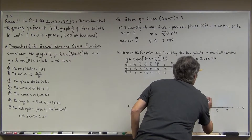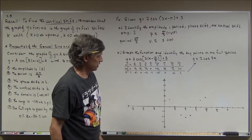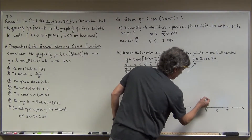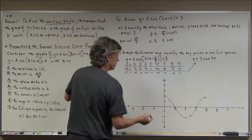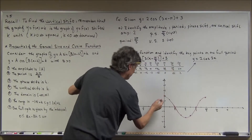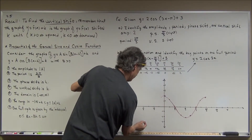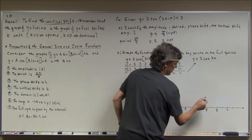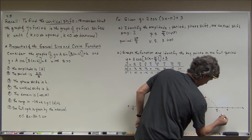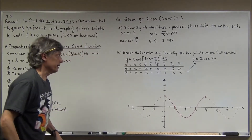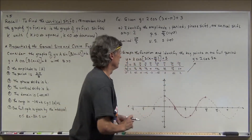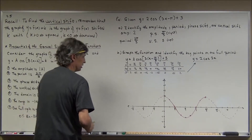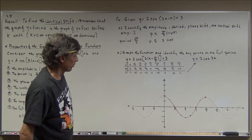Those points give me one full cycle — you can see it going from 2 back up to 2. I'll continue this with a dotted curve to show more of the graph, but the key points cover one full period. Now, to get the final graph from this intermediate graph, I apply the two shifts: π/3 units to the right and 3 units up. I'll use green so it won't be confused with the purple.